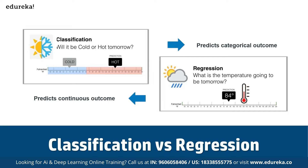We have two different types of algorithms: binary classification and multi-class classification. Comparing classification with regression: classification predicts categorical outcomes — for example, will it be hot or cold tomorrow — while regression focuses on predicting continuous outcomes, like what the exact temperature will be tomorrow.